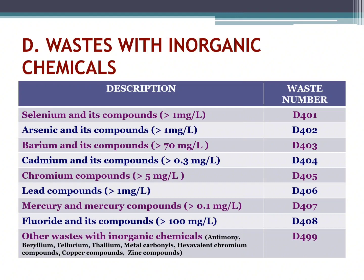Chromium compounds, 5 mg per liter, waste number D405. Lead compounds, 1 mg per liter, waste number D406. Mercury and mercury compounds, 1 mg per liter, waste number D407. Fluoride and its compounds, 100 mg per liter, waste number D408.